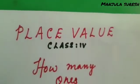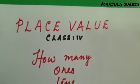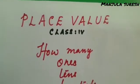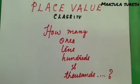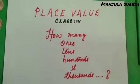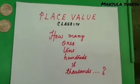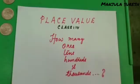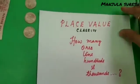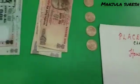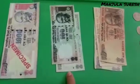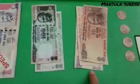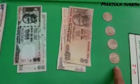To teach the concept of how many ones, tens, hundreds and thousands in a given number. This is based for class 4. For this we need teaching aid as denominations of thousand, hundred, tens and ones.